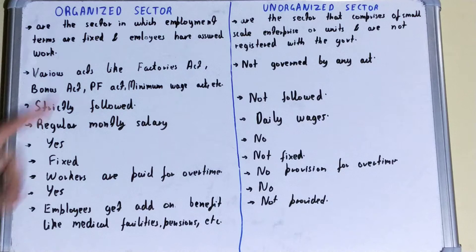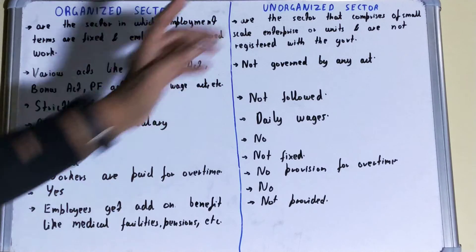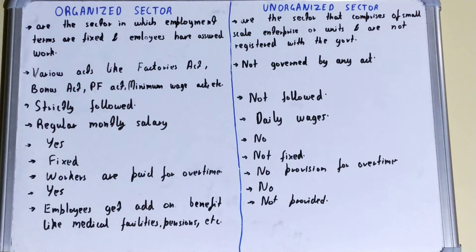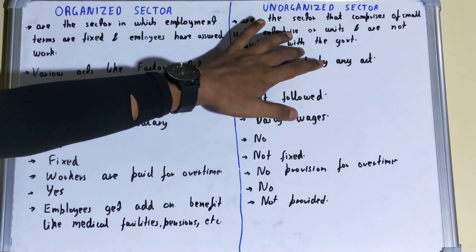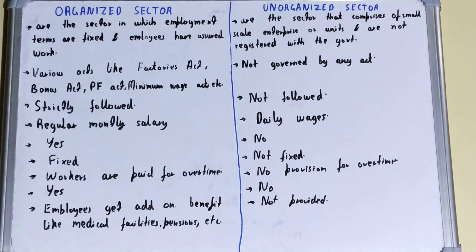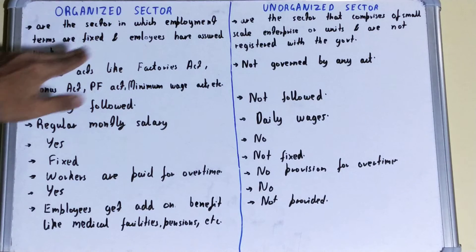In the case of the organized sector, they are liable to pay taxes — taxation is applied upon them. But in the case of the unorganized sector, taxation is not done because they are not registered with the government. For example, temporary laborers, carpenters, and other workers recruited on a temporary basis come under the unorganized sector.